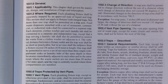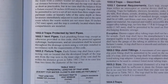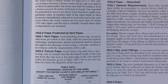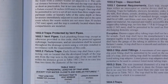Each plumbing fixture trap, except as otherwise provided in this code, shall be protected against siphonage and back pressure, and air circulation shall be assured throughout the drainage system using a vent pipe. The reason for venting is to protect the trap from siphoning out — you have to have a vent for every trap. Each fixture trap shall have a protecting vent located so that the developed length of the trap arm from the trap weir to the inner edge of the vent is within the distance given in Table 1002.2, but in no case less than twice the diameter of the trap arm. So if I have a 2-inch diameter trap, the smallest trap arm length I can have is 4 inches.